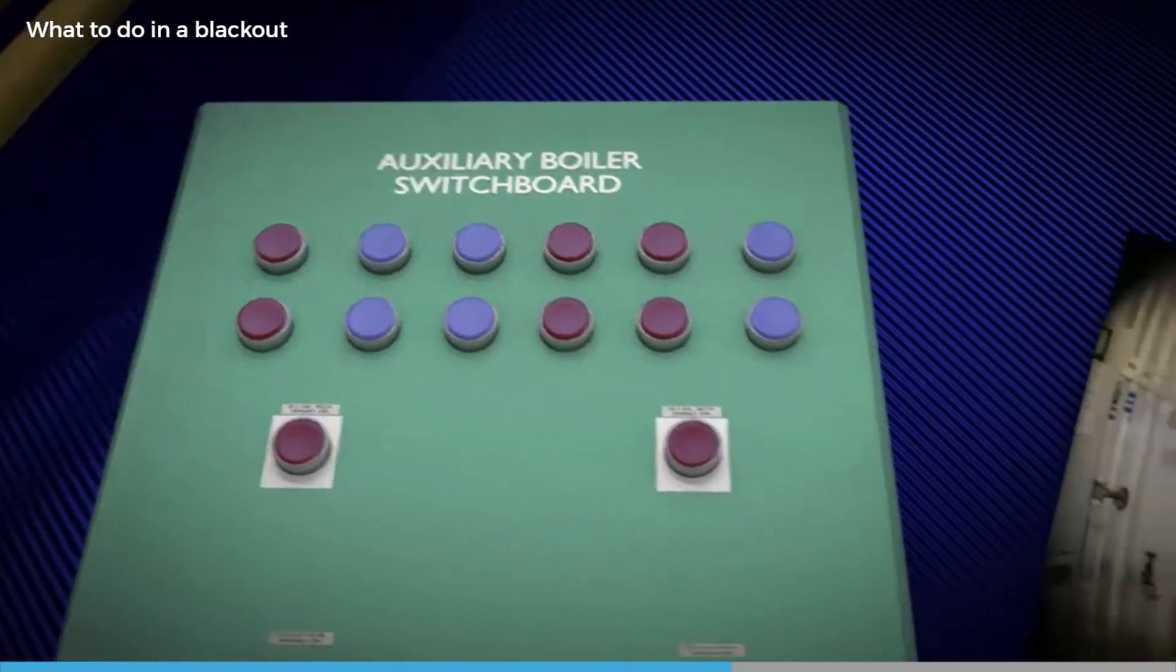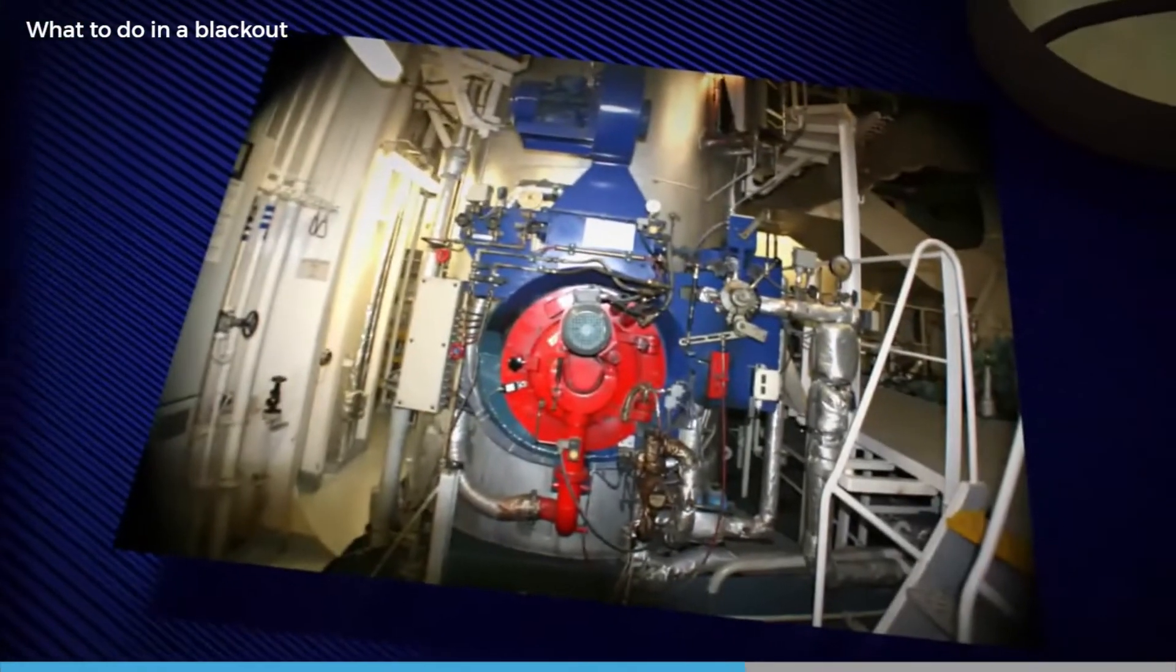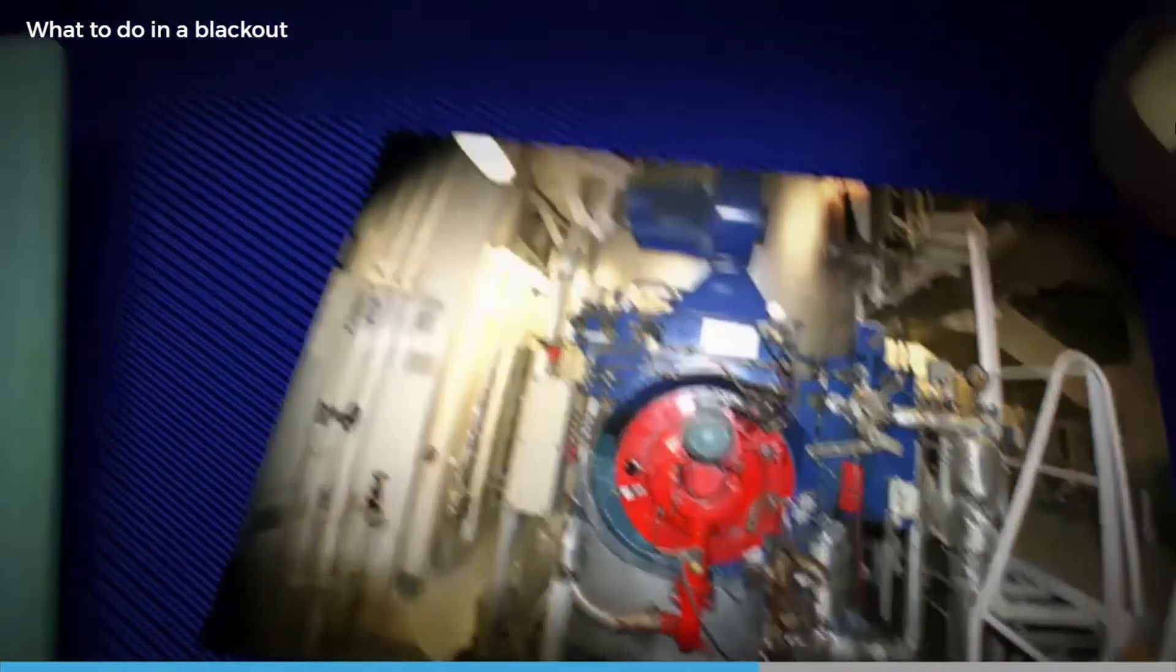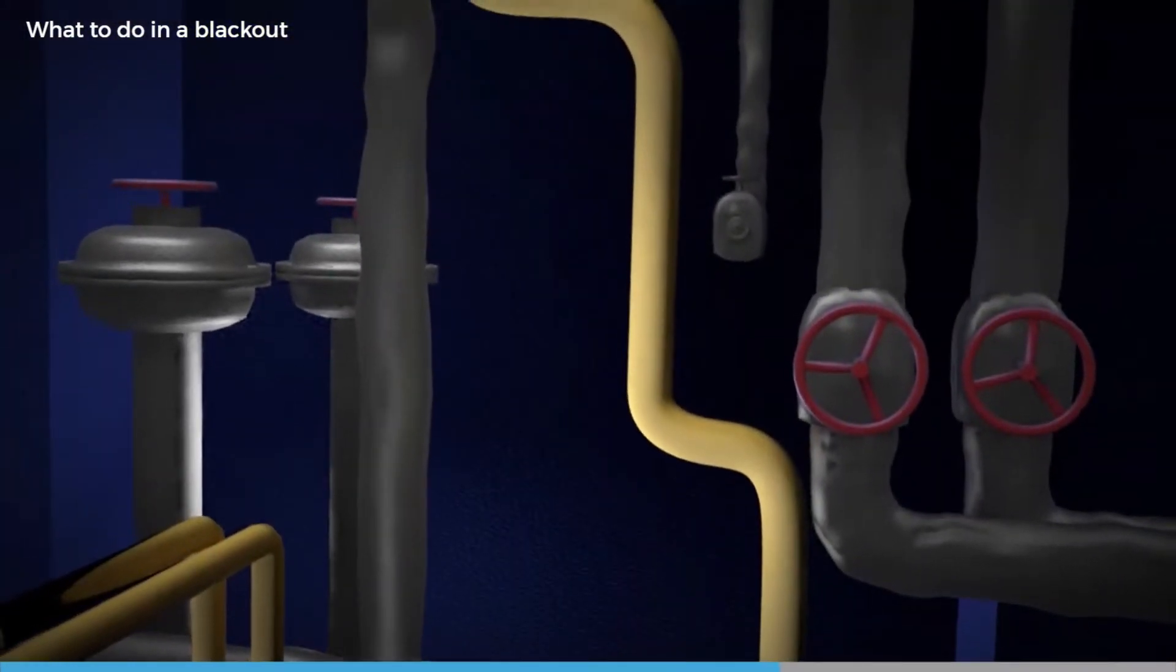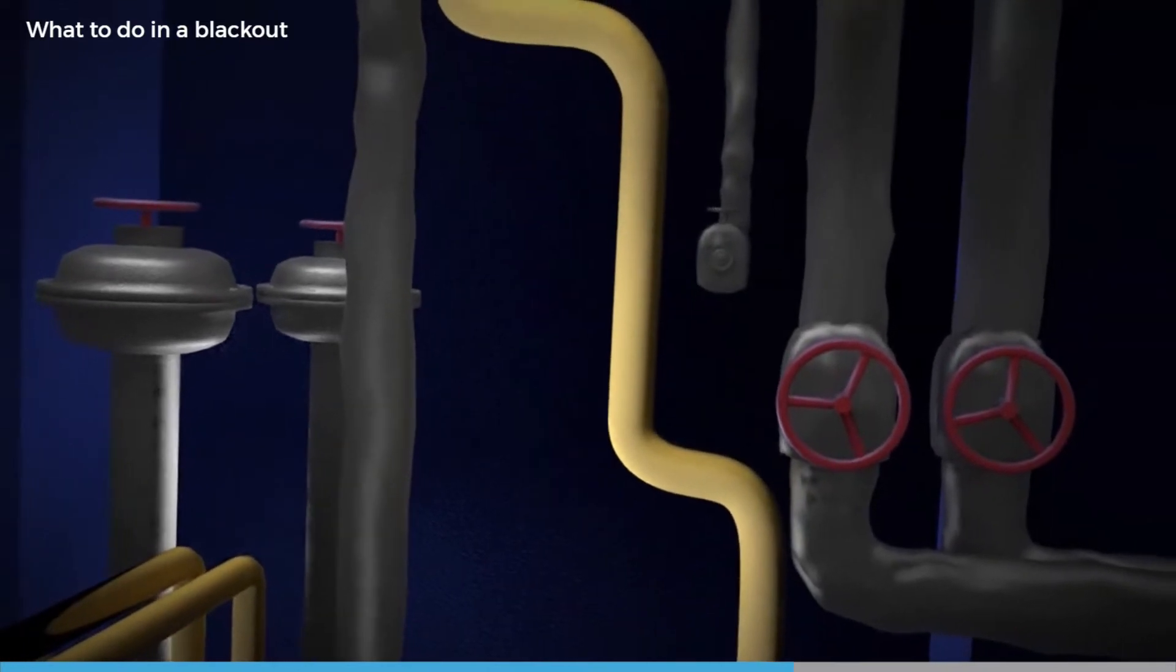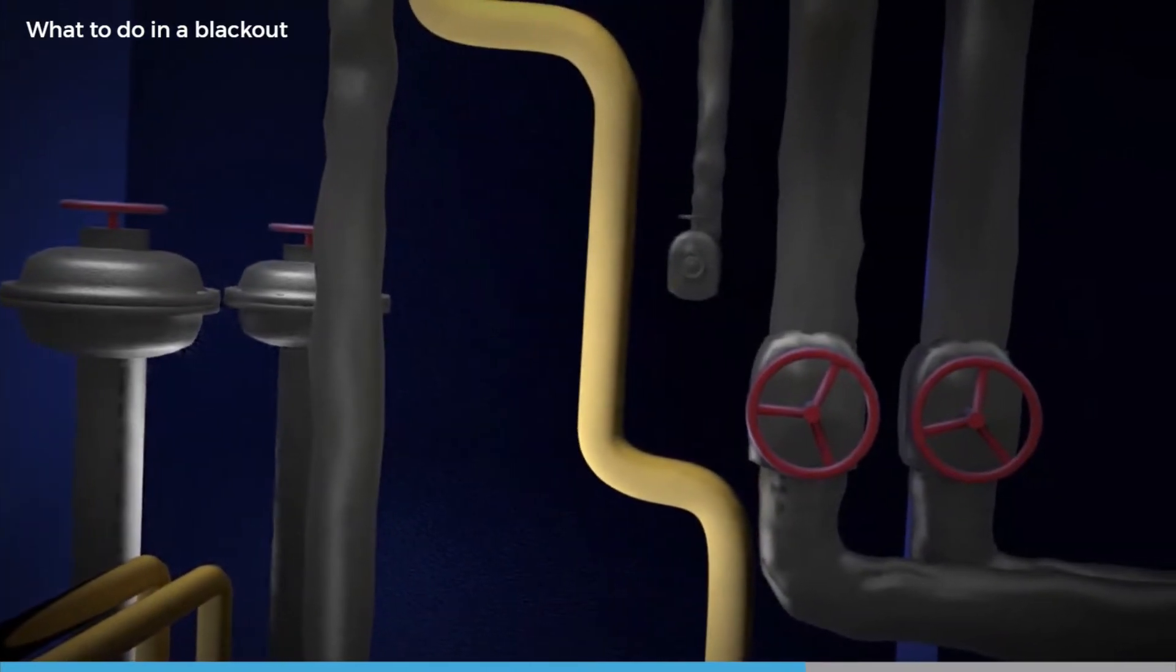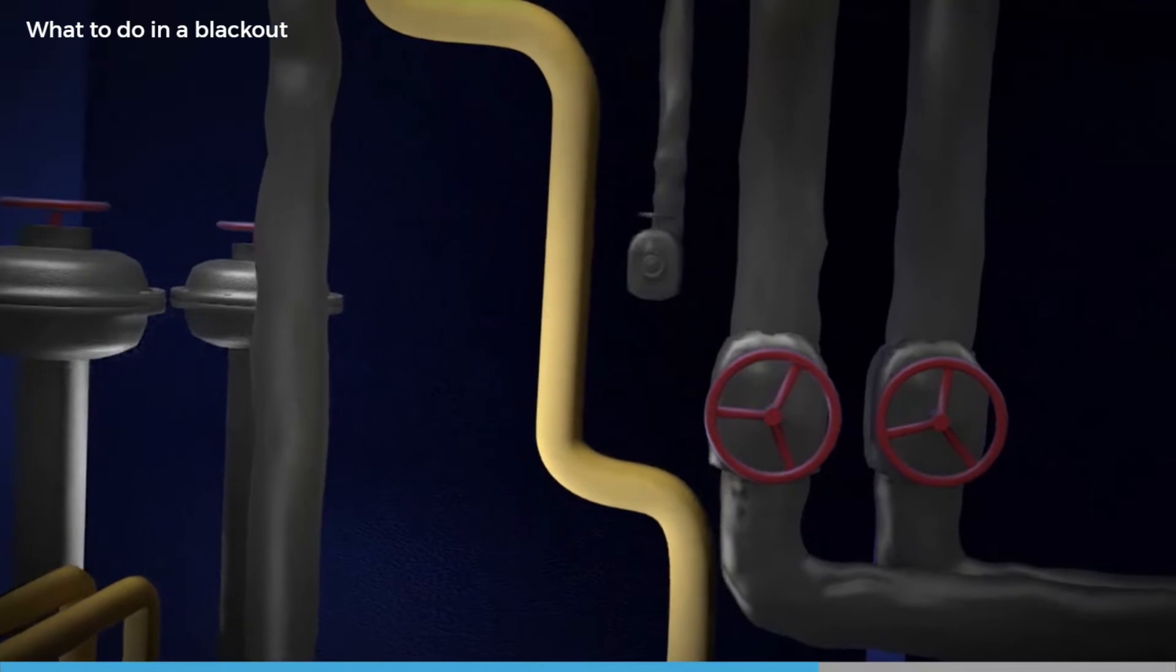If the auxiliary boiler was running, shut the main steam stop valve to maintain the steam pressure. Once manpower is available, it might be a good idea to close off the steam to non-essential services, such as tank heating.